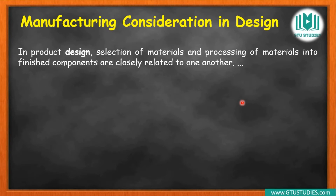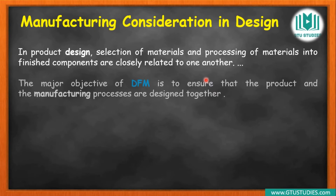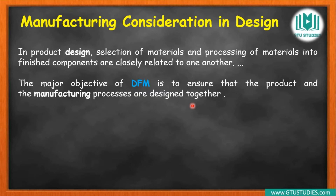In product design, the selection of materials and processing of materials into finished components are closely related to one another. The material you select and how the final product is made from that material are almost the same process. So DFM means Design for Manufacturing — the major objective is to ensure that the product and manufacturing process are designed together.